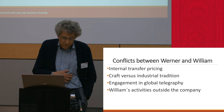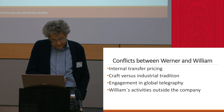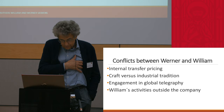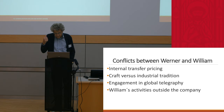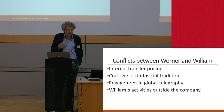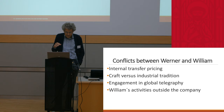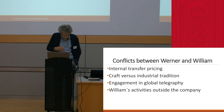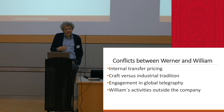A very big conflict between the brothers concerned the Siemens engagement in global telegraphy. The question was how to engage in global telegraphy. In William's opinion, the company should manufacture, lay, and operate the telegraph cables. In Werner's opinion, that was too risky — Siemens should not compete with the market leaders. And at the end of the day, that meant for Siemens only a secondary position at the cable market.